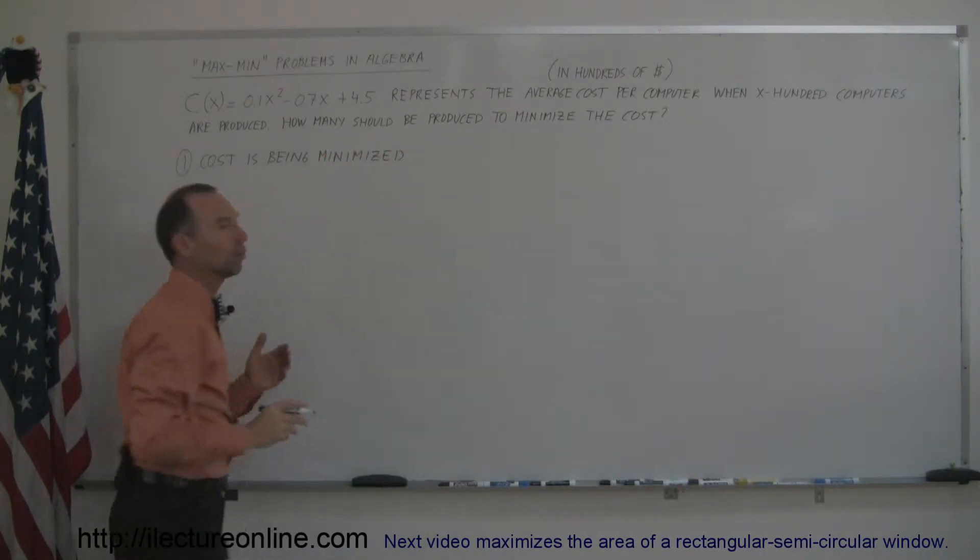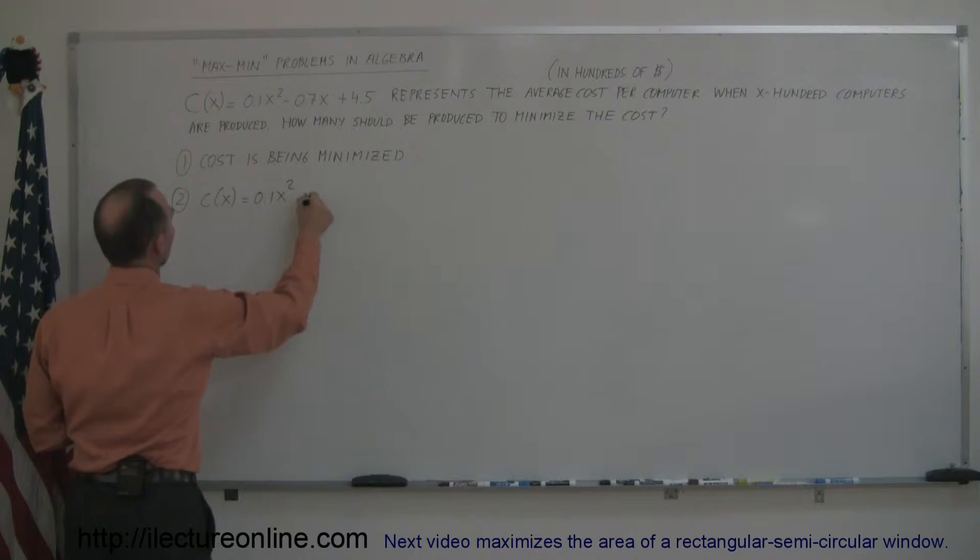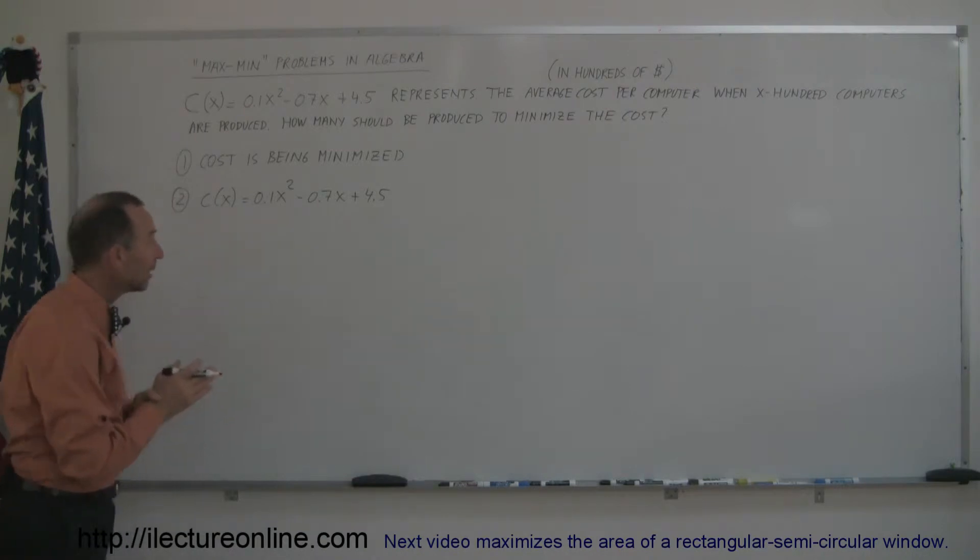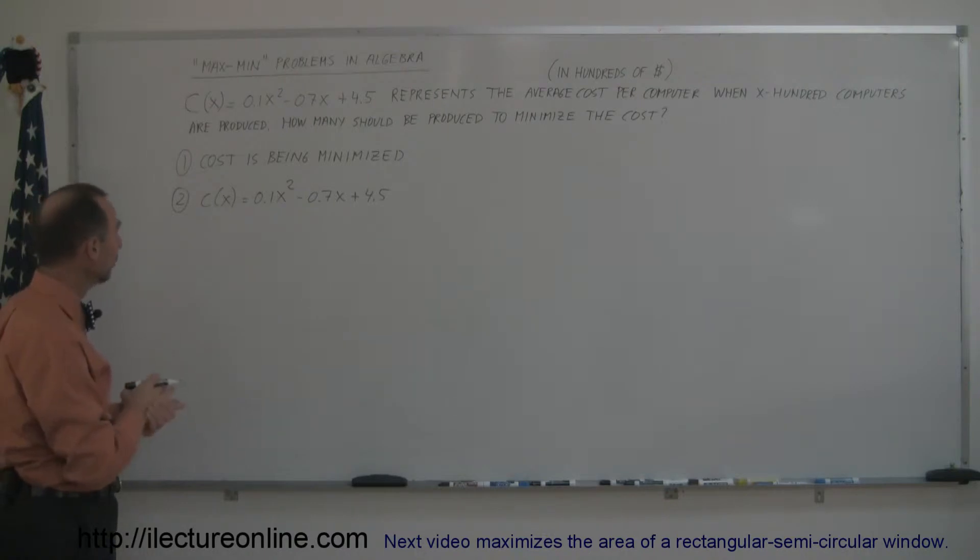The second thing you always do is try to find an equation representing the item that's being maximized or minimized. Cost in this case, so cost as a function of x is equal to 0.1x squared minus 0.7x plus 4.5. So in this case, we don't have to go and eliminate any variables because c is written in only one variable, which is great, so we don't have to find any constraint.